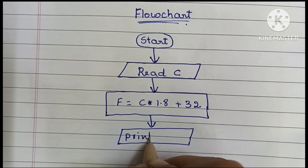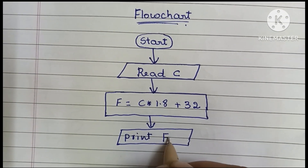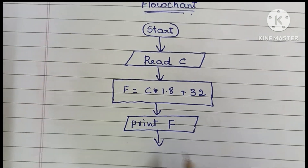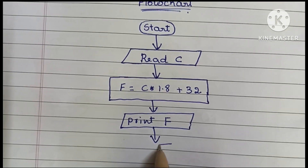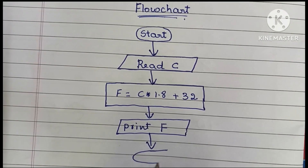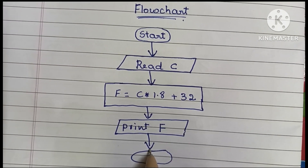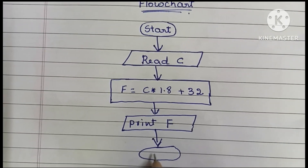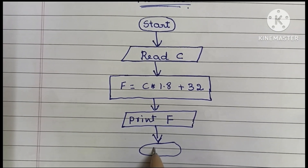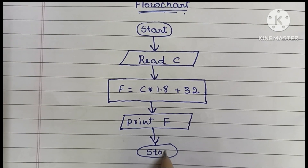Next we have to print the output value — print F. Then we stop the flowchart using the stop statement. The stop statement is always written within an oval shape.